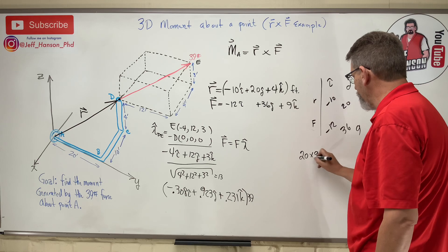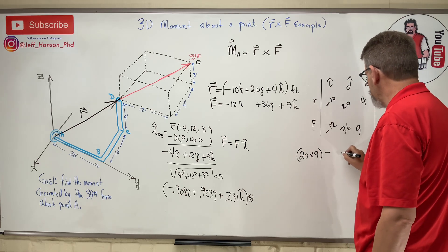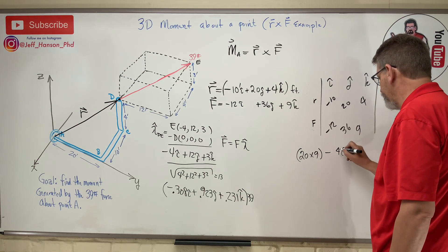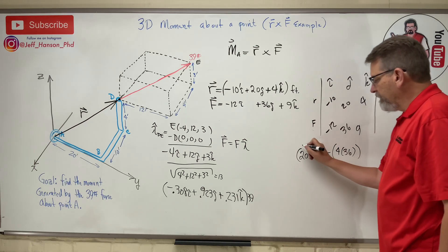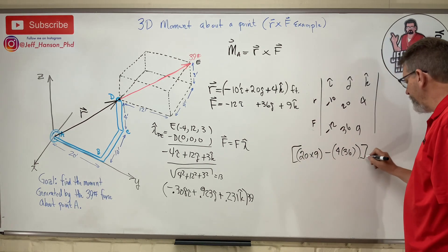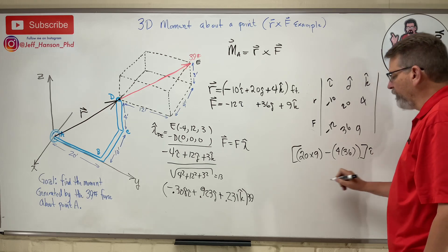Here we go. Cover up the i and I get this and that. So 20 times 9 minus 4 times 36. That is my i-hat.